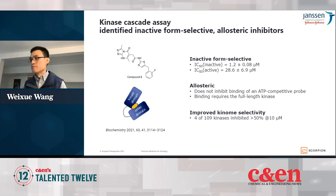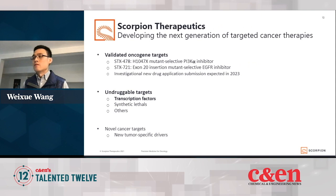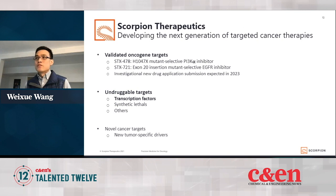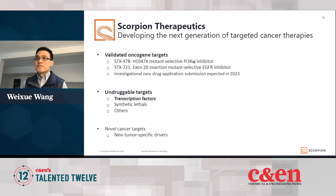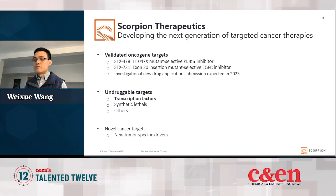Now I'm going to switch topics and talk about the work I'm doing at Scorpion Therapeutics. At Scorpion, we're developing the next generation of targeted cancer therapies. We work on not only validated oncogene targets like kinases, but also on undruggable targets — for example, transcription factors. I will talk a little bit more about drug discovery for undruggable targets.